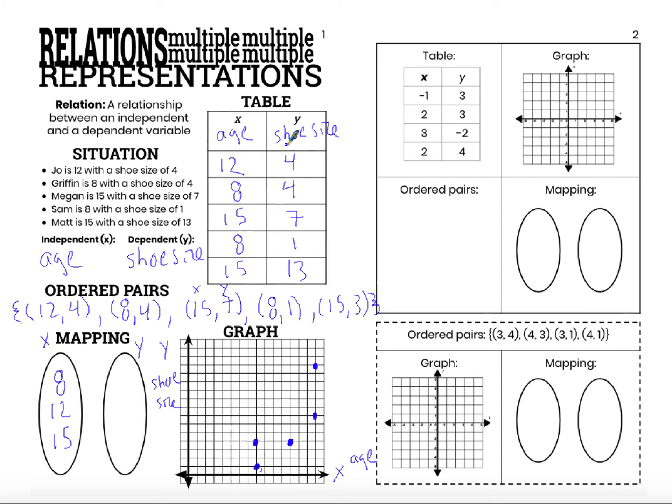Within the right oval, I write my values of shoe size. Oh, my smallest shoe size isn't 4. I want to write my smallest shoe size as 1. I have a shoe size of 4, shoe size of 7, and a shoe size of 13. So these are all my possible shoe sizes.